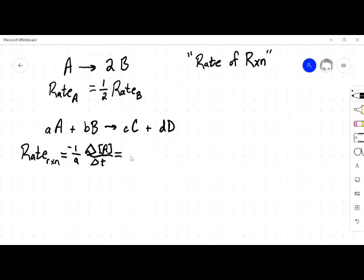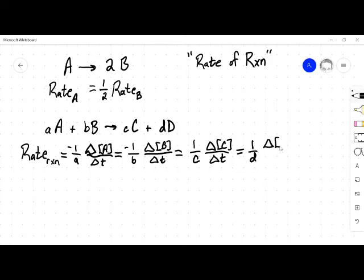Which is also equal to 1 over c, now we're at a rate of production, so we don't need the negative anymore. Change in concentration of C over change in time, which is equal to 1 over d times the rate with respect to D, which is change in concentration of D over the change in time.